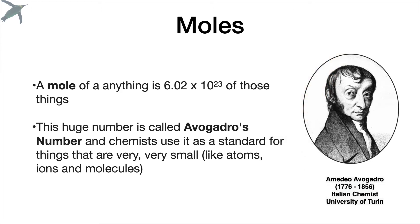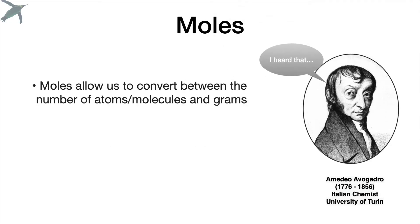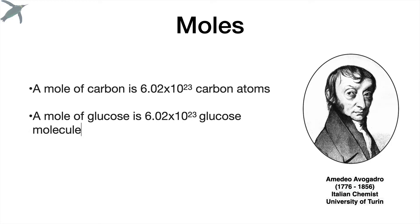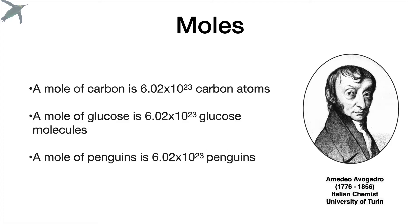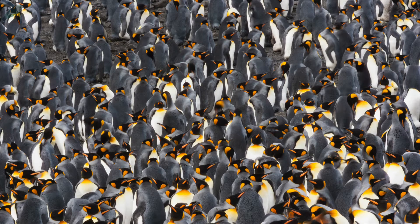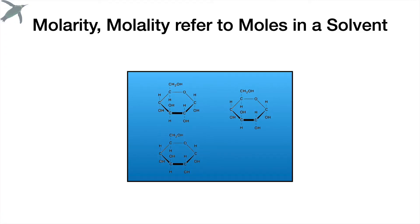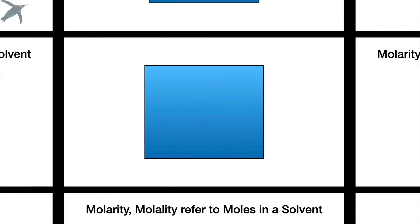Chemists use this for things like atoms, ions, and molecules. It's super convenient because it allows us to convert numbers of atoms or molecules into grams. In 2018, the definition of a mole changed to the number of atoms in exactly 12 grams of carbon-12. So you can have a mole of carbon, a mole of glucose, a mole of penguins. In this video, we're talking about the number of moles dissolved in a solvent. Now that you're more comfortable with moles, let's get into it.